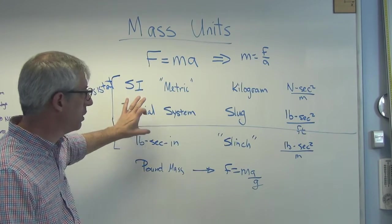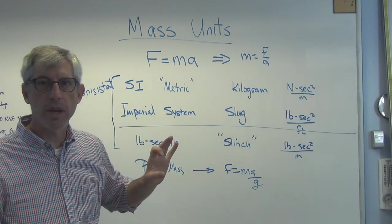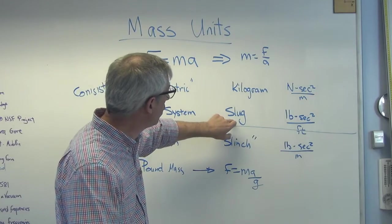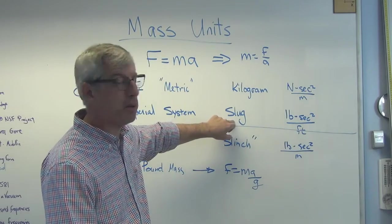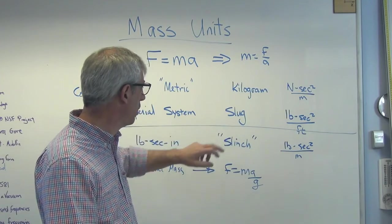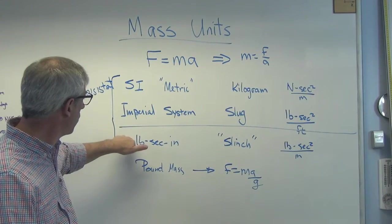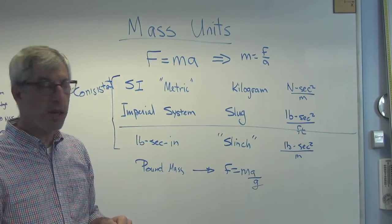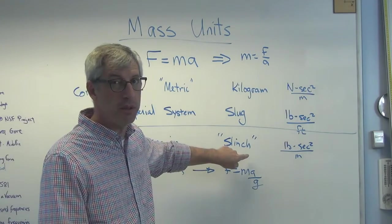The imperial system, which is dying, not quickly enough in my opinion, the only correct unit is the slug. This is an old-time British thing from hundreds of years ago. So if you're consistent, your units are pounds, seconds, and inches, you have to work in slinches. You don't have a choice.